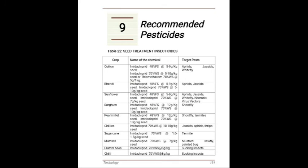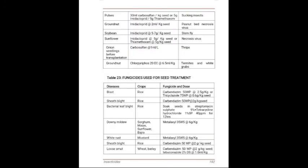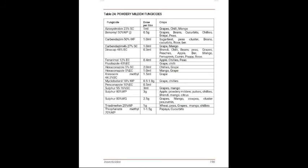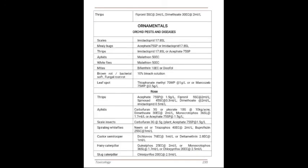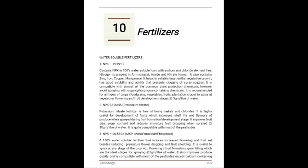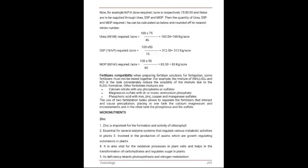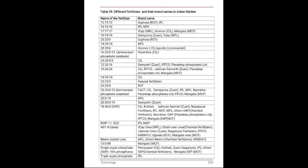The ninth chapter is Recommended Pesticides. Table 22 has seed treatment insecticides, Table 23 has fungicides used for seed treatment, Table 24 has powdery mildew fungicides, and Table 25 has pesticides used for different crops like oil seeds, fruit crops, plantation crops, ornamental crops, vegetable crops, rice, etc. The tenth chapter is Fertilizers, covering water soluble fertilizers, Table 26 on forms of nutrients absorbed by roots and their mobility in plants, Table 28 on micronutrients used in crops, and Table 29 on different fertilizers and their brand names in the Indian market.